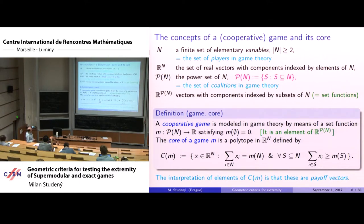A game is any set function with that property — there are no additional axiomatic requirements. Other conditions will be introduced separately. This polytope can potentially be empty.